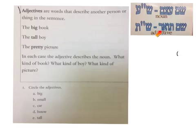What is an adjective? What is a Sheyem To'ar? A Sheyem To'ar is a description that describes a Sheyem Etsem, which we have learned previously, is a noun, a person, place, or thing.